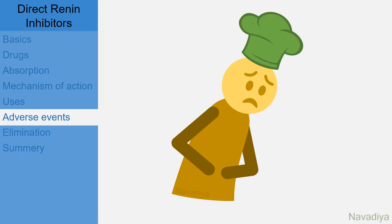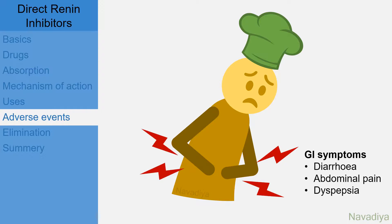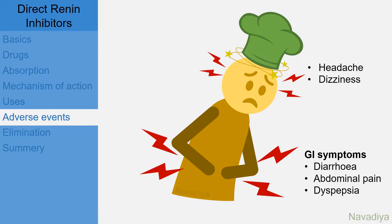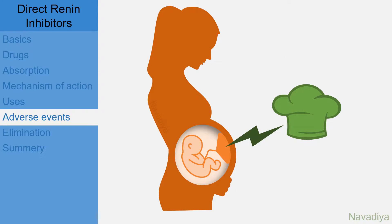Next are adverse events. These include GI symptoms like diarrhea, abdominal pain and dyspepsia, headache, dizziness, and hyperkalemia. It is also teratogenic, so it is not recommended in pregnancy.